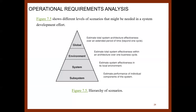At the environment level, we look at taking the system through an entire functional period to see how it performs. At the system level, we estimate the system effectiveness in its local environment. At the subsystem level, we estimate the performance of individual components. In the Hubble telescope case, the performance was not tested for some of those subsystems, which is why it eventually was not able to perform as expected.